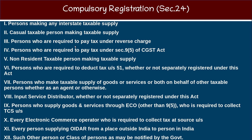A casual taxable person must do their own registration compulsorily. Persons who are required to pay tax under the reverse charge mechanism under Section 9(5) of the CGST Act must do compulsory registration.